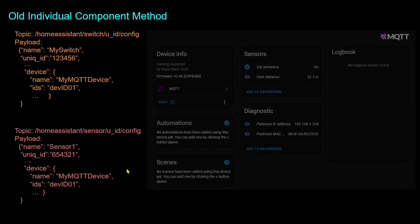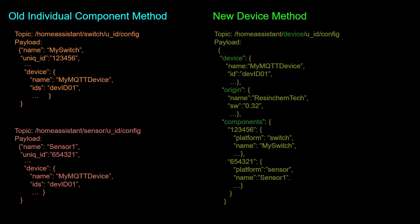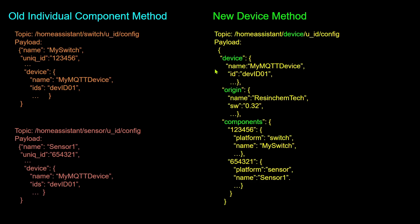With the new device method, a single MQTT message is published for the device and all of its entities or components. Note that the discovery topic uses 'device' for the type, where previously the entity type was used. The payload consists of three primary nested keys: device, origin, and components. The device key would contain much the same info used in the previous message, like the device name, unique ID, model, etc.